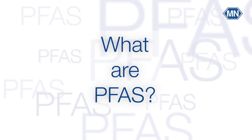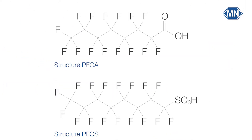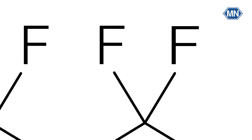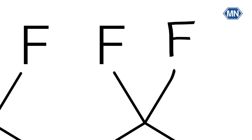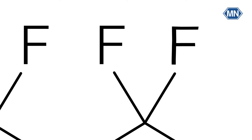What are PFAS? There are over 4,000 compounds that belong to the group PFAS. PFAS are organic compounds with a carbon chain in which the hydrogen is substituted by fluorine. The carbon-fluorine bond is very strong, which makes them virtually indestructible. PFAS are forever chemicals — chemicals that are very persistent in the environment and in the human body.